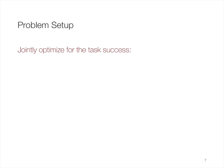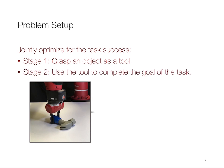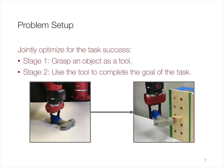In our work, we aim to directly optimize for task success by jointly choosing a task-oriented grasp and its subsequent manipulation actions. Each task can be considered as a two-stage process: in the first stage, the robot grasps an object as a tool; in the second stage, the robot uses the tool to complete the goal of the task.